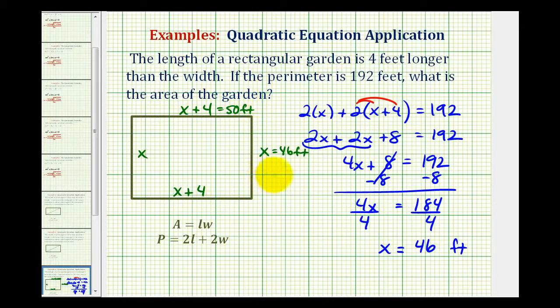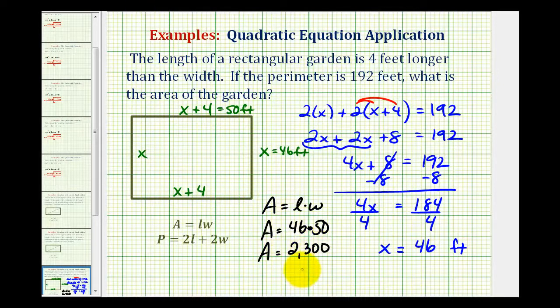And now we have the information we need to find the area of this garden. The area of a rectangle is equal to length times width. So in this case, the area is going to be equal to 46 feet times 50 feet. So the area is going to be equal to 2300, and this would be square feet.